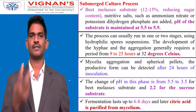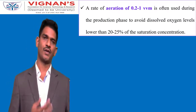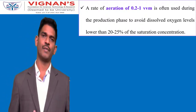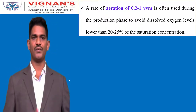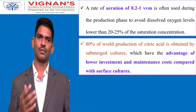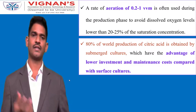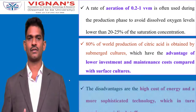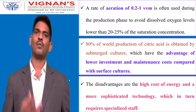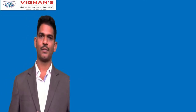After fermentation, citric acid is recovered and purified from the mycelium. The citric acid production process is aerobic and requires an adequate supply of oxygen, with an aeration rate of 0.2 to 1 VVM. About 80% of world citric acid production is obtained by the submerged process. Advantages include low investment and maintenance costs, while disadvantages include high energy costs and the need for sophisticated technology and specialized staff.